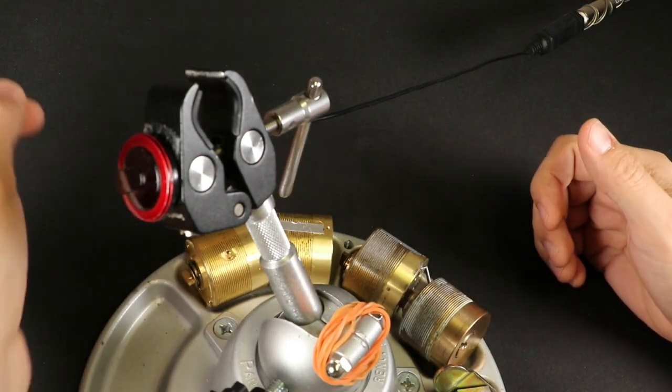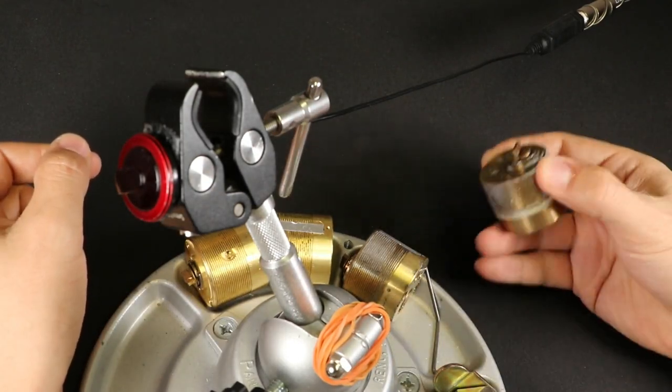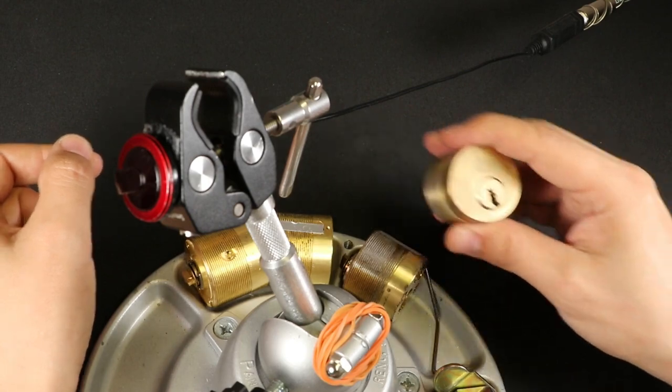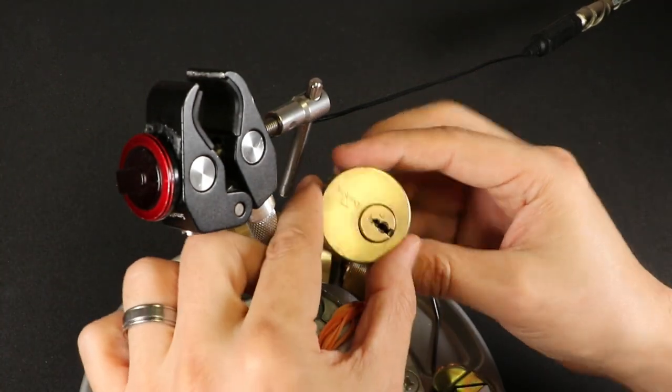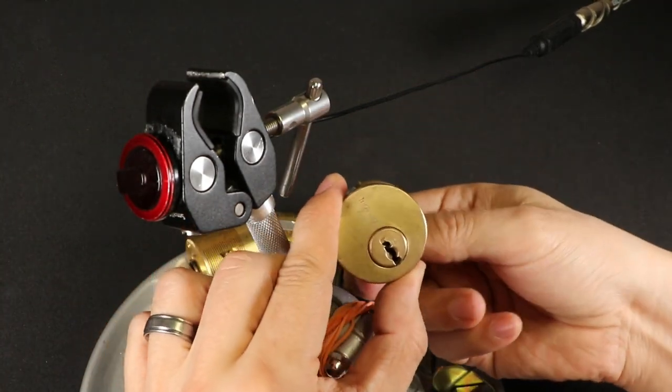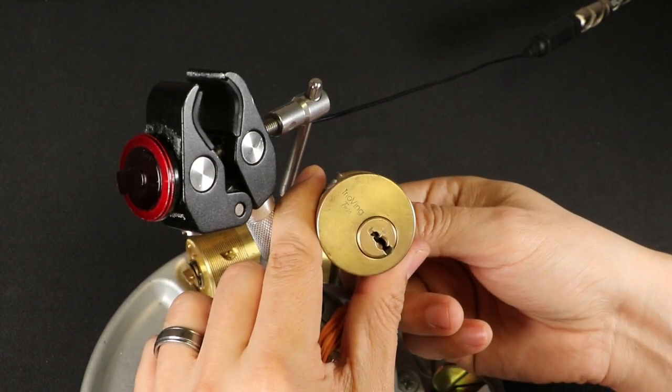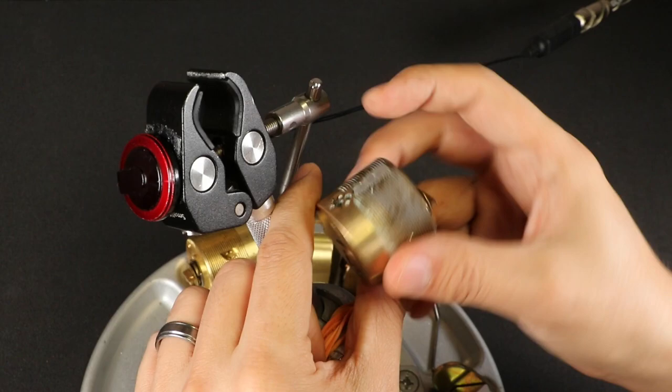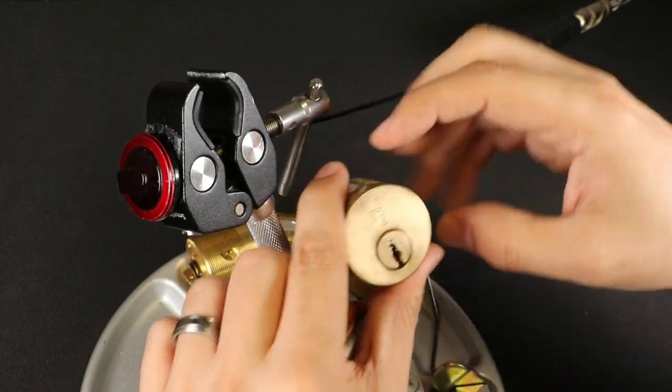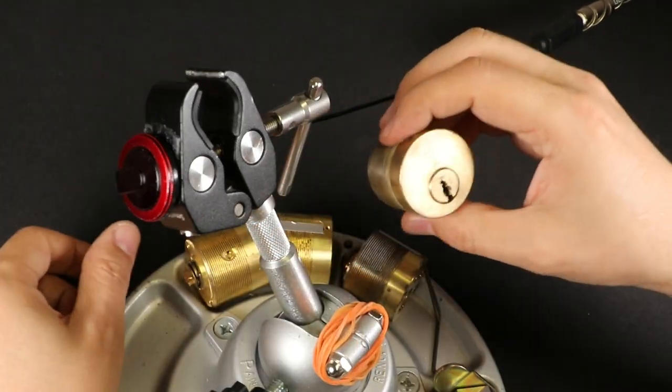All right, I got a bunch of these twin control cylinders in from Norway. They are, I'm pretty sure they're the same thing as the Combi, the Assa Twin Combi 5800. I'm not sure if there's something a little bit different. We'll take a look in after picking it and gutting it.